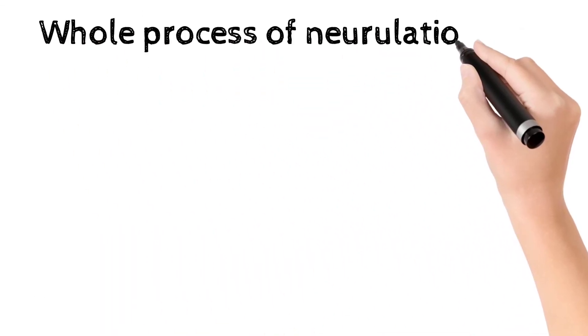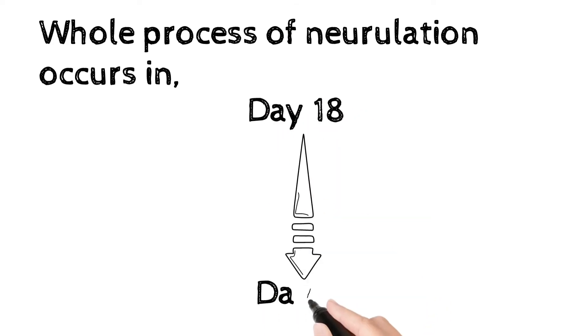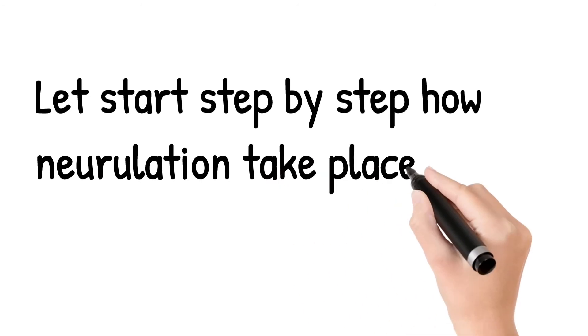Whole process of Neurulation occurs from day 18 to day 21. Let's start step by step how Neurulation take place.